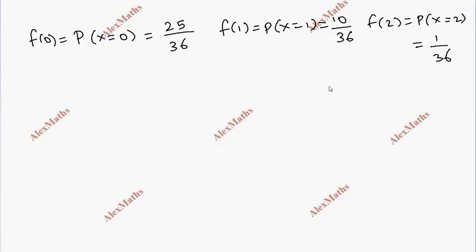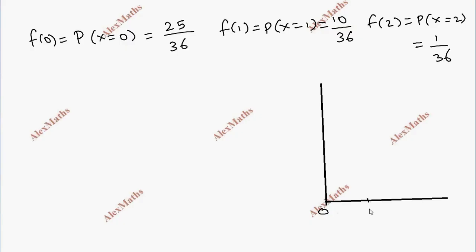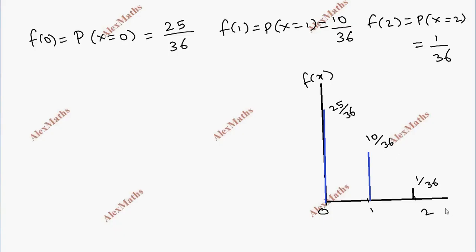Now we plot the graph with the x-axis and y-axis. On the x-axis we plot 0, 1, 2. The first value is 25/36 — which is the highest. Then 10/36, and 1/36. This represents f(x), the probability mass function of the random variable x.